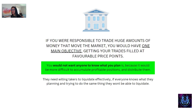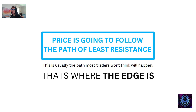If you were responsible for trading huge amounts of money that move the market, you would have one main objective: getting your trades filled at favorable price points. You would not want anyone to know your plan because it would be more difficult to accumulate profitable positions and distribute them. If you knew there was a great deal coming up, you wouldn't tell anyone because then everyone would want to buy it and the price would go up. So you would quietly buy this asset without letting anyone know. They need willing takers to liquidate effectively. Price is going to follow the path of least resistance always — usually the path most traders won't think will happen, and that is where you will find your edge.